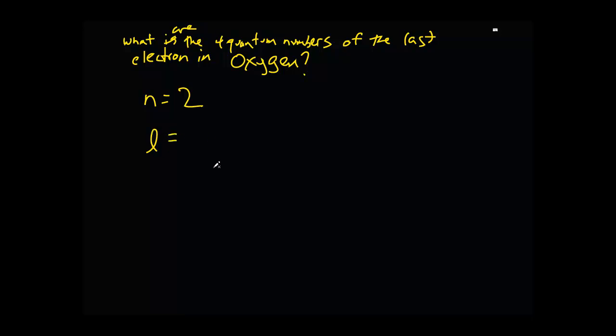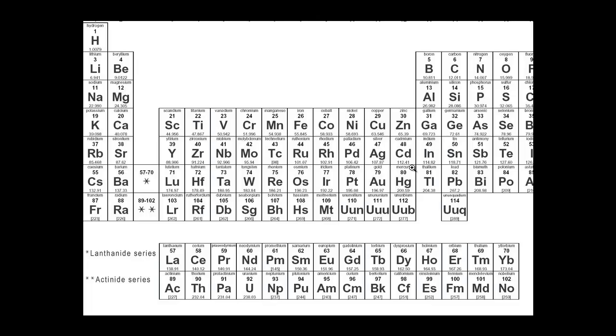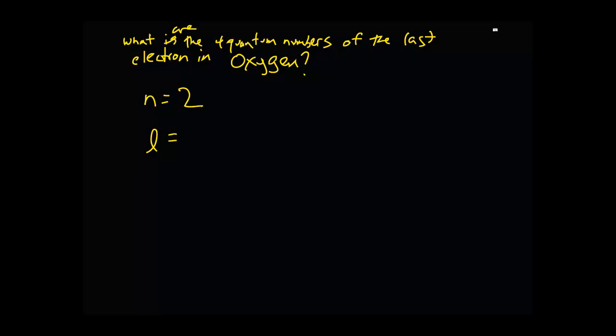Next, we need the L. So, is that last electron in an S, P, D, or F orbital? Let's see. Well, it looks like it's in a P because according to the electron configuration this is actually 2S1, 2S2, 2P1, 2P2. So, that last electron is going to be in a P. So, the second quantum number is 1.